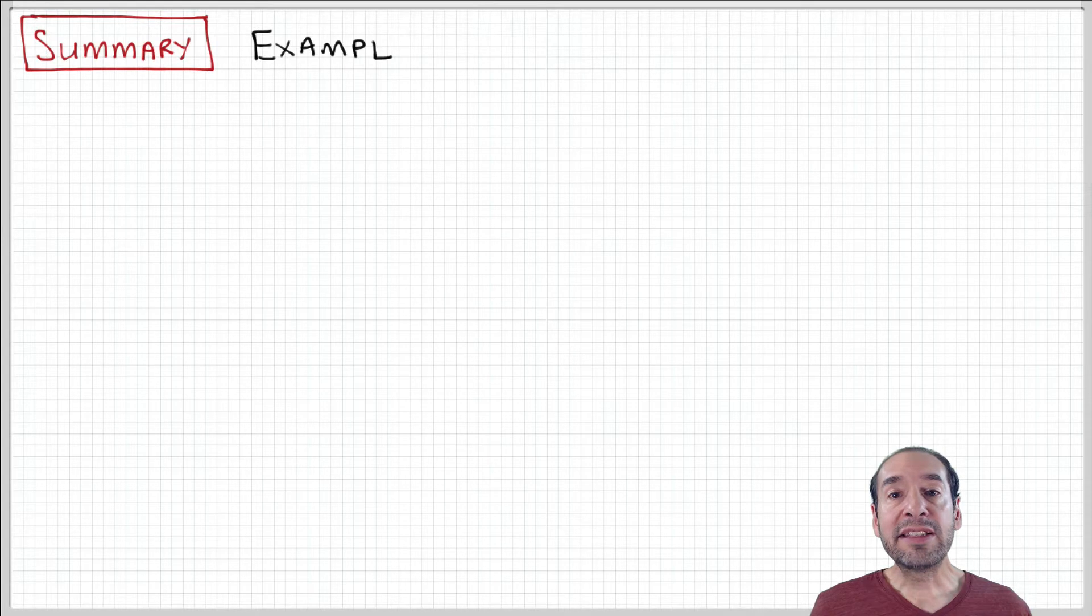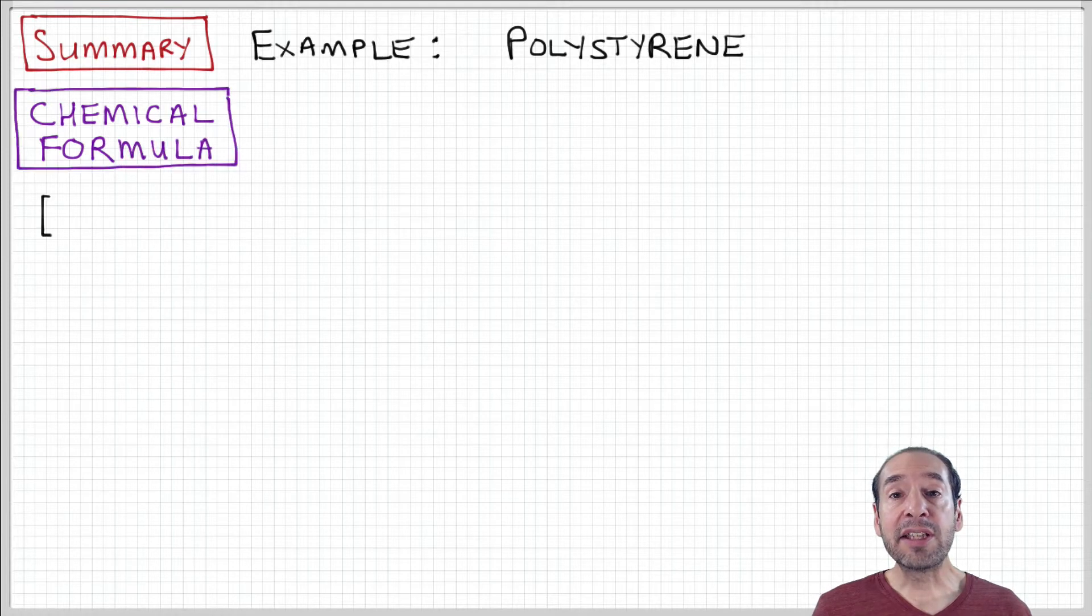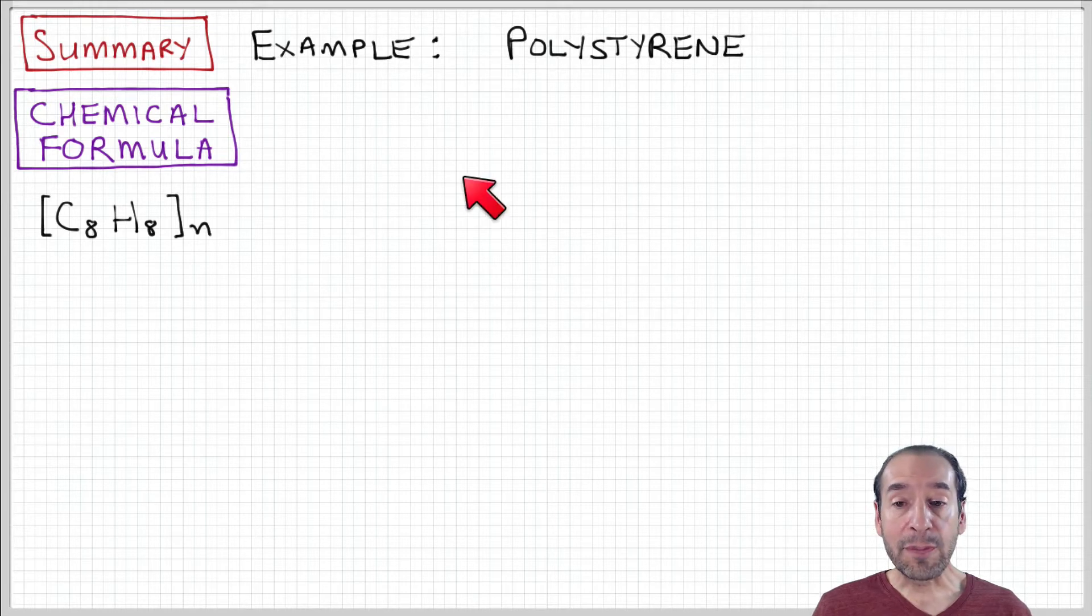Okay, so let's take a moment to summarize the way that we have classified these kinds of features of polymers based on stereoregularity. So remember, at the beginning of the course, we started with a simple chemical structure. So for polystyrene, for example, I could write that as C8H8 to the N. So this tells me what are the chemical components.